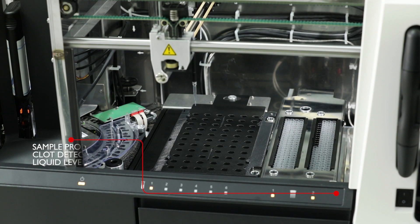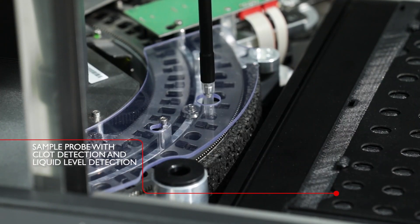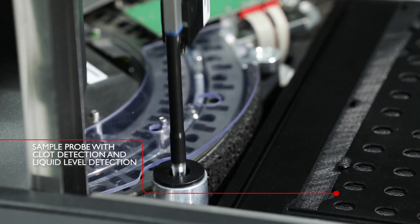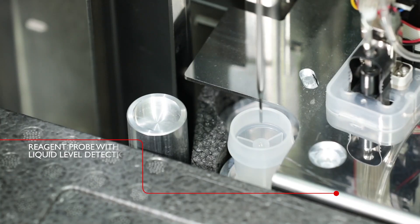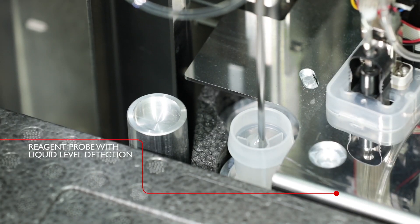A predefined volume of samples and reagents is pipetted into the cuvette. Disposable tips, active washing plus liquid level and clot detection all ensure accurate pipetting.